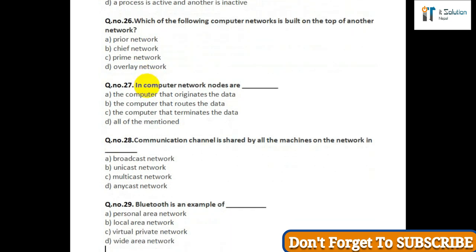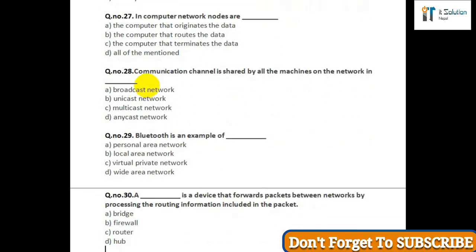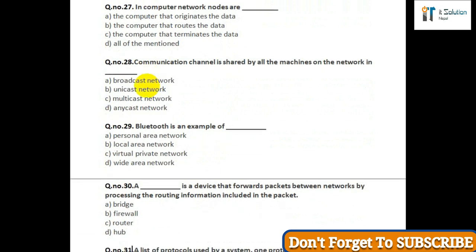Question number twenty-nine: Bluetooth is an example of — option A: personal area network; option B: local area network; option C: virtual private network; option D: wide area network. Question number thirty: A device that forwards packets between networks by processing the routing information included in the packet — option A: bridge; option B: firewall; option C: router; option D: hub.